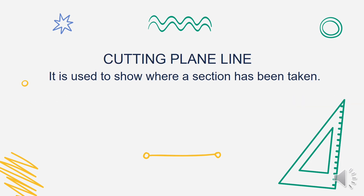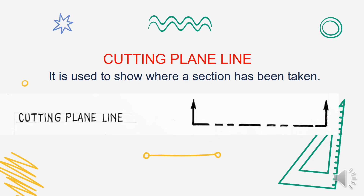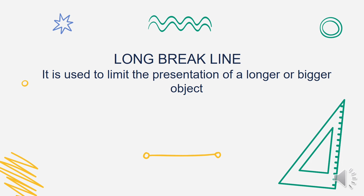Next is the cutting plane line. It is used to show where a section has been taken. We use this when there is a portion of the drawing that is cut. It usually has thick lines. Again, it is used to show where a section has been taken — that is the cutting plane line.